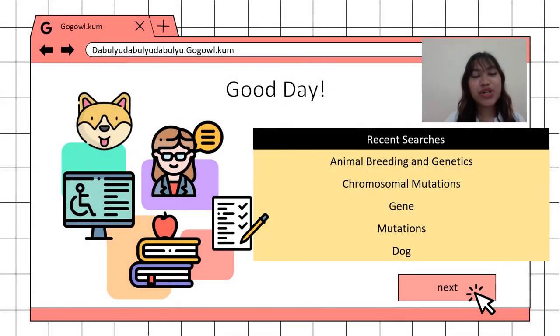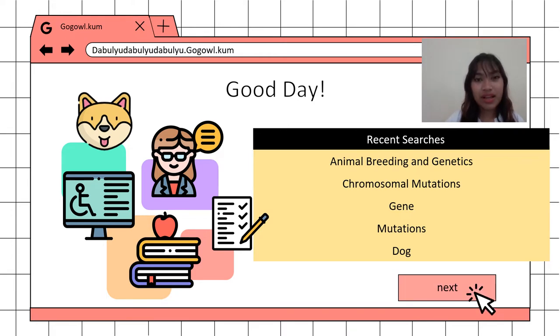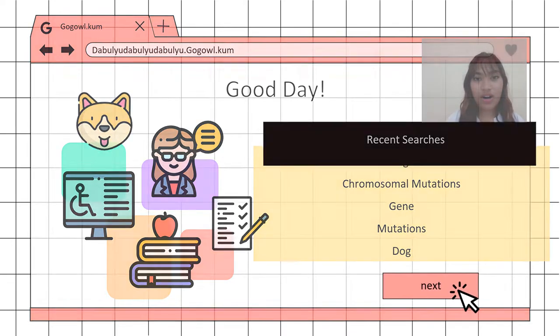Hello, I'm Strawberry Lois Arquenca. Me and my group mates will talk about a gene mutation mainly for the animal, which is the dog.